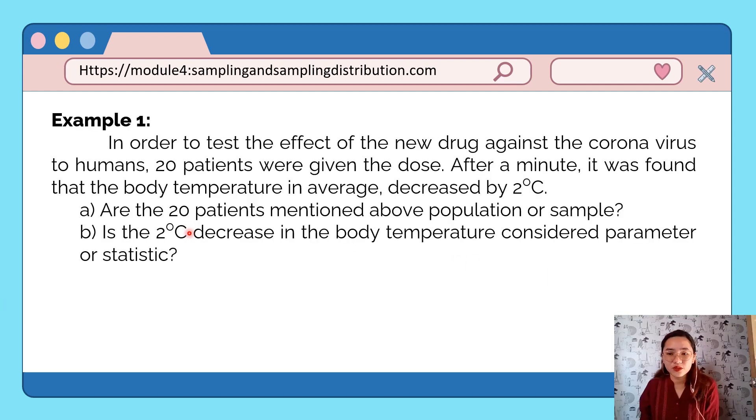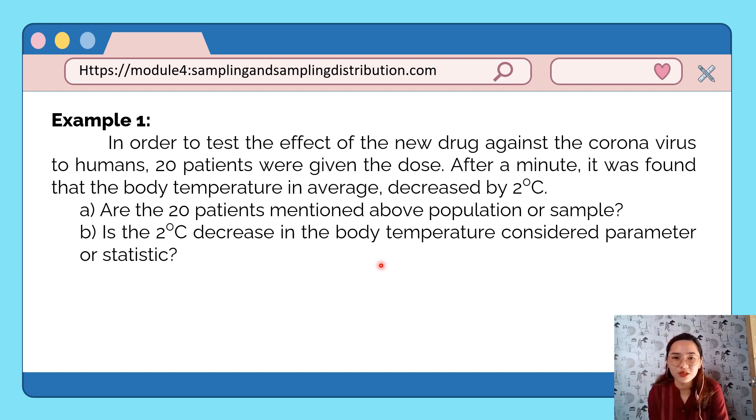Let's have some examples on how we identify parameter and statistics. Example number one: In order to test the effect of a new drug against the coronavirus to humans, 20 patients were given the dose. After a minute, it was found that the body temperature on average decreased by 2 degrees Celsius. Letter A: Are the 20 patients mentioned above population or sample?